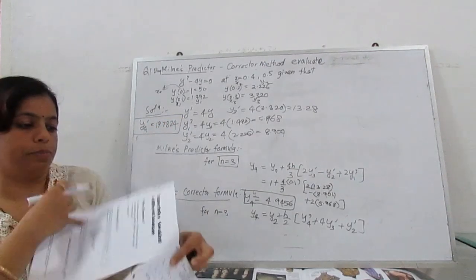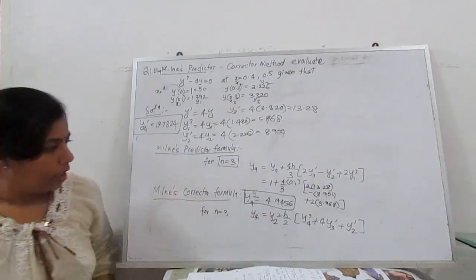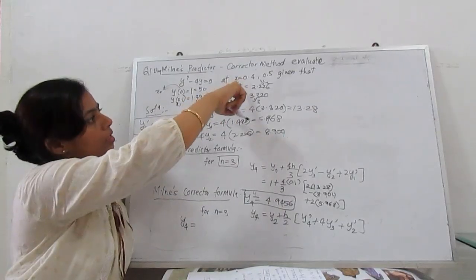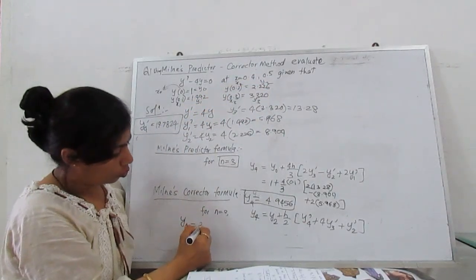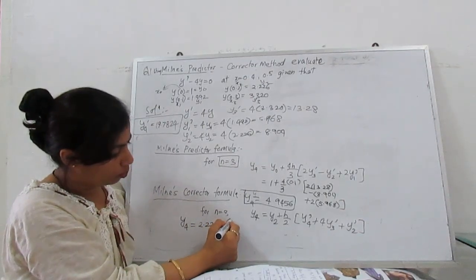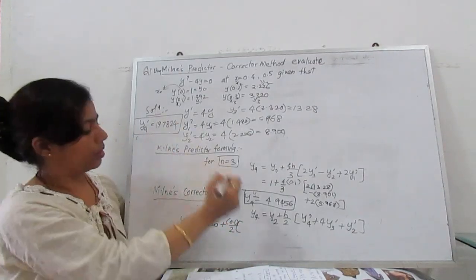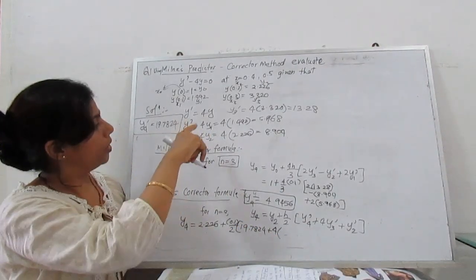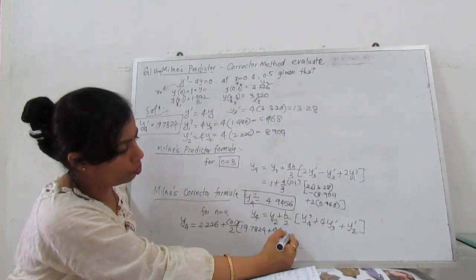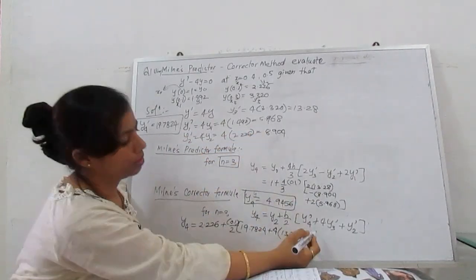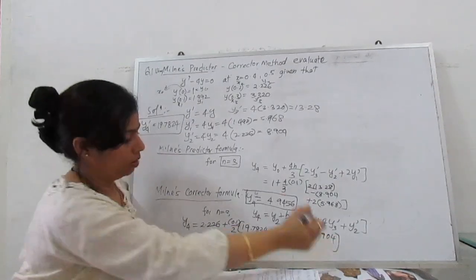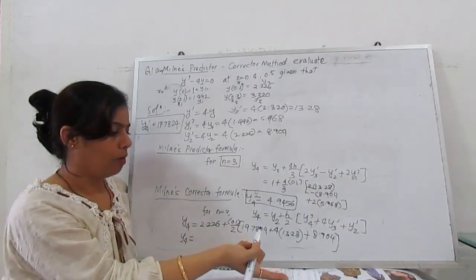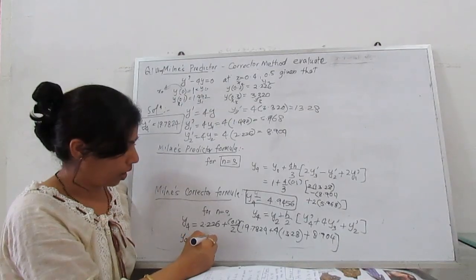So y'₄ is 4 times 4.9456, which is 19.7824. Now we have to substitute every value in our corrector formula. y₄ = y₂, which is 2.226, plus (0.1/3)[y'₄, which is 19.7824, plus 4 times y'₃, which is 13.28, plus y'₂, which is 8.904]. When you calculate, you will get the exact value for y₄, which becomes 4.95288.